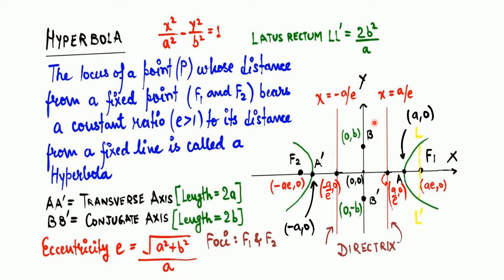These two vertical lines are called the directrix, with equations x = -a/e and x = a/e. The points A and A' are called the vertices. B and B' are called the co-vertices. The length of the transverse axis is 2a.